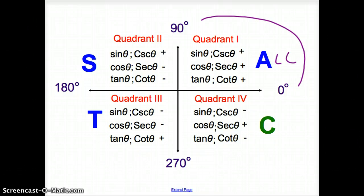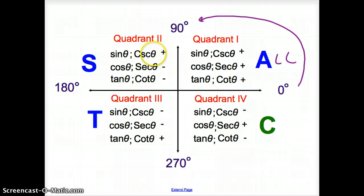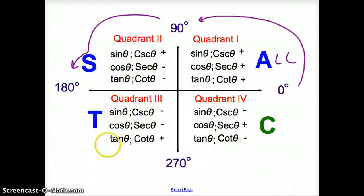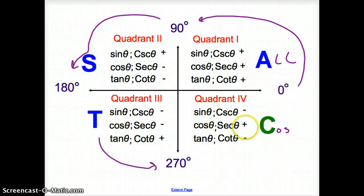As we move over to 90 degrees, we're in quadrant two, where we have the S. Only the sine and its reciprocal cosecant are positive; the rest are negative. Then we keep going to 180 degrees — quadrant three — where it's the T. T stands for tangent; tangent and its reciprocal cotangent are positive, while sine and cosine are negative. Finally, in quadrant four, where we have the C, cosine is positive — so cosine and secant are positive — while sine and tangent are negative.